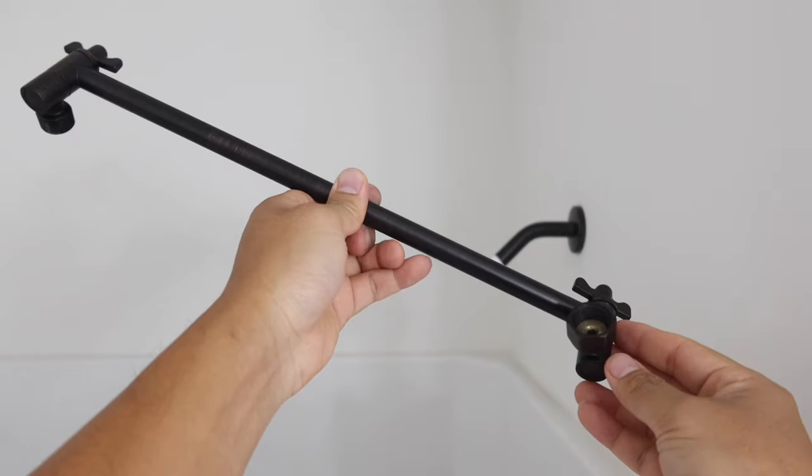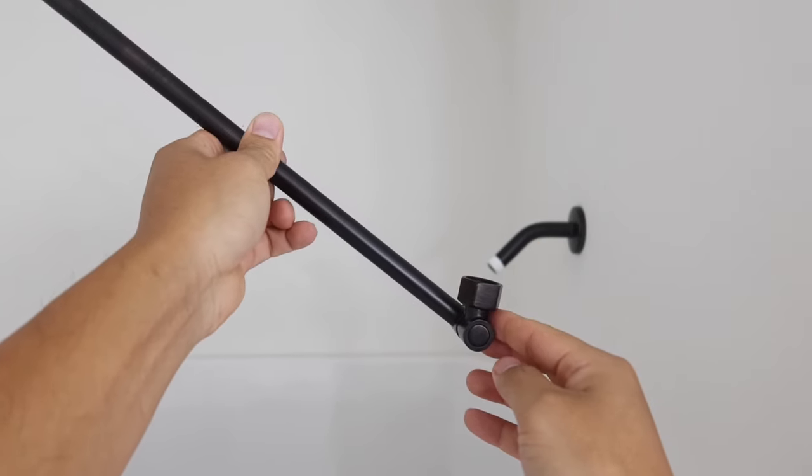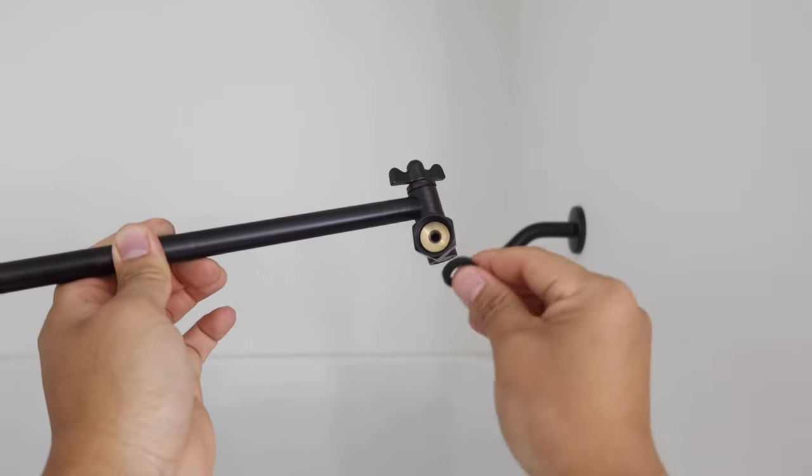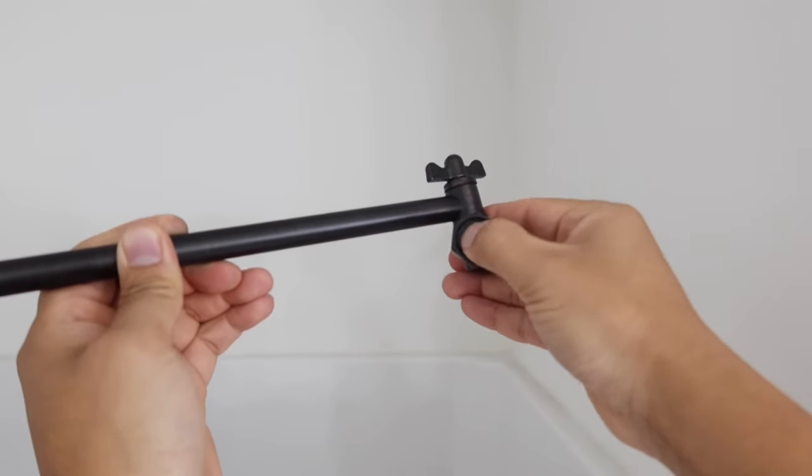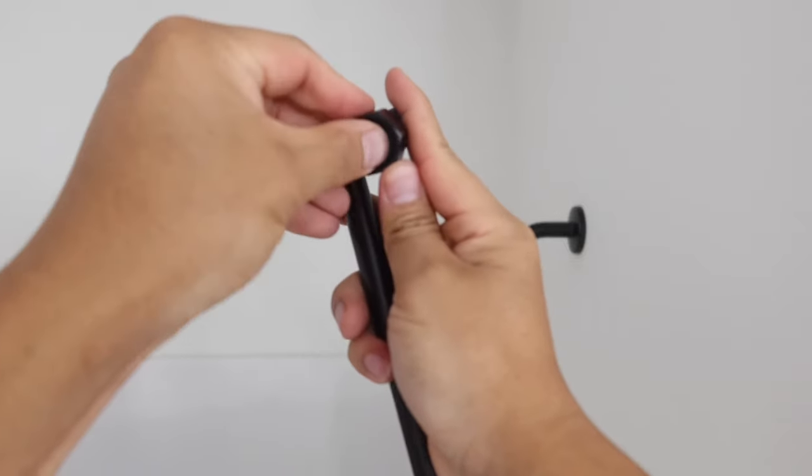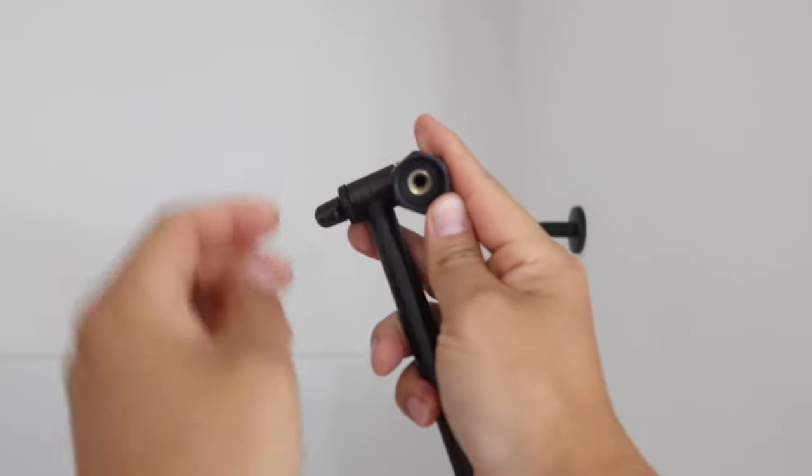Next go ahead and grab our extension arm. Before we connect this to our shower we want to make sure we put this little plastic seal piece inside of this little hole right here. Go ahead and insert this in here, push it down, make sure it's all the way in. The reason why we're doing this is we want to make sure there will be no water leaking out from this end of the arm.